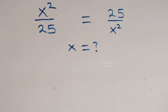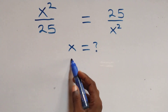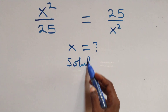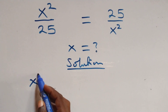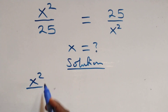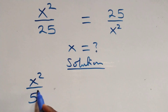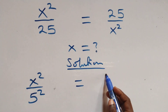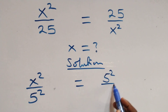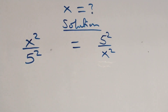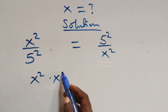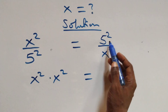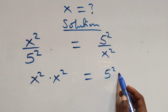Hello, you're welcome. How to solve this nice exponential equation. From here, what we have we can write as x² over 25 — that is 5 times 5, also 5² — equals 5² over x².